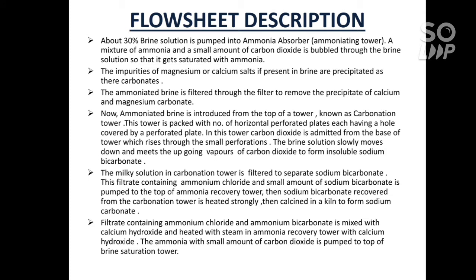Flow sheet description: About 30% brine solution is pumped into an ammonium absorber. A mixture of ammonia and a small amount of carbon dioxide is bubbled through the brine solution so that it gets saturated with ammonia. Impurities of magnesium and calcium salts, if present in the brine, precipitate as their carbonates. The ammoniated brine is then filtered to remove the precipitate of calcium and magnesium carbonate.